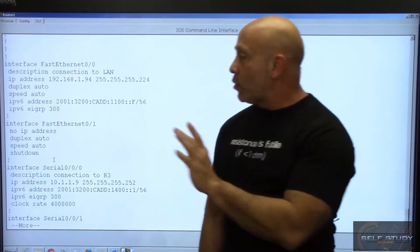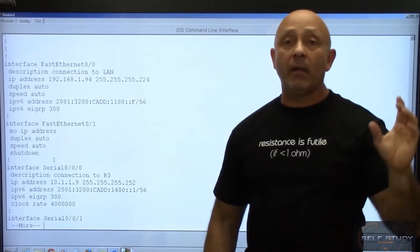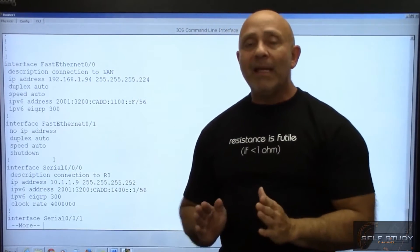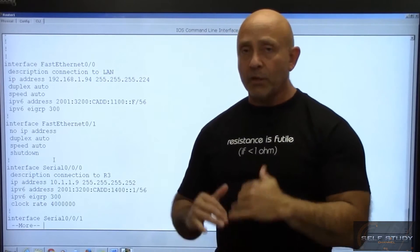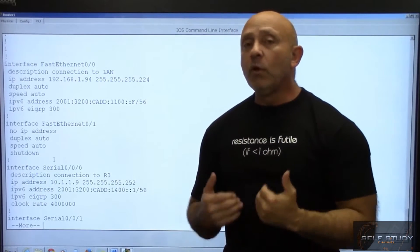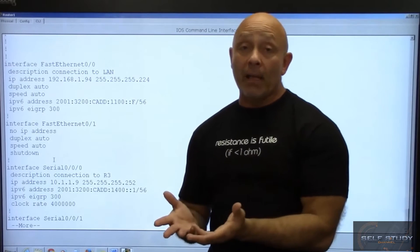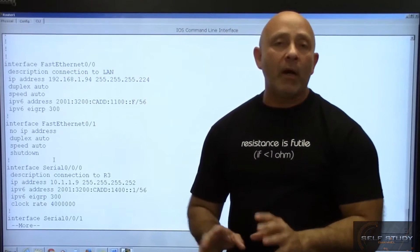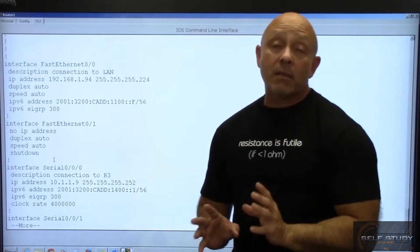In global config it actually puts it in global config. The only thing I would need to do is then go back in global config and maybe put the router ID and do the no shut because those are things that are required when you're configuring EIGRP for IPv6.